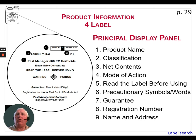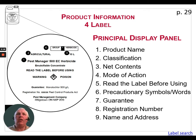The fourth item, which is very important, is the mode of action of that chemistry. In this case it's a Group 1 herbicide. You will always see this in a rectangular box on any pesticide you purchase. Products can also have multiple modes, so you may have a Group 1, a Group 5, and a Group 9 combined if there are multiple active ingredients in the same container.